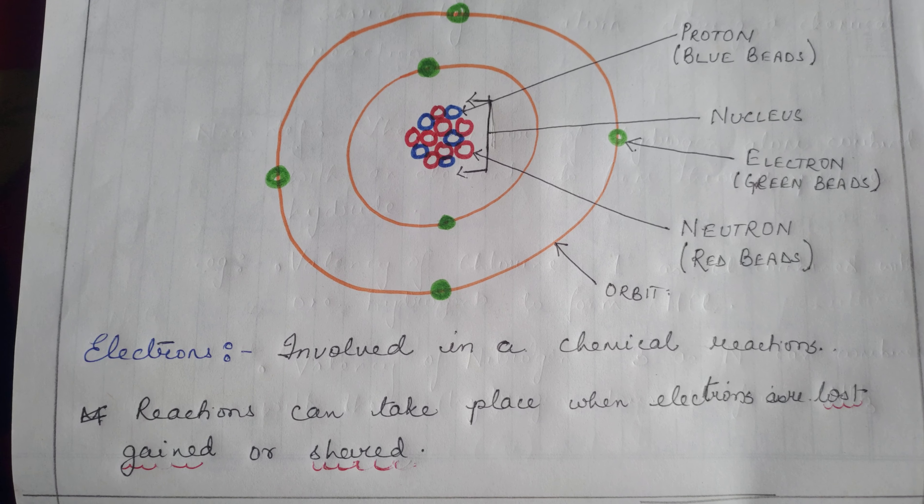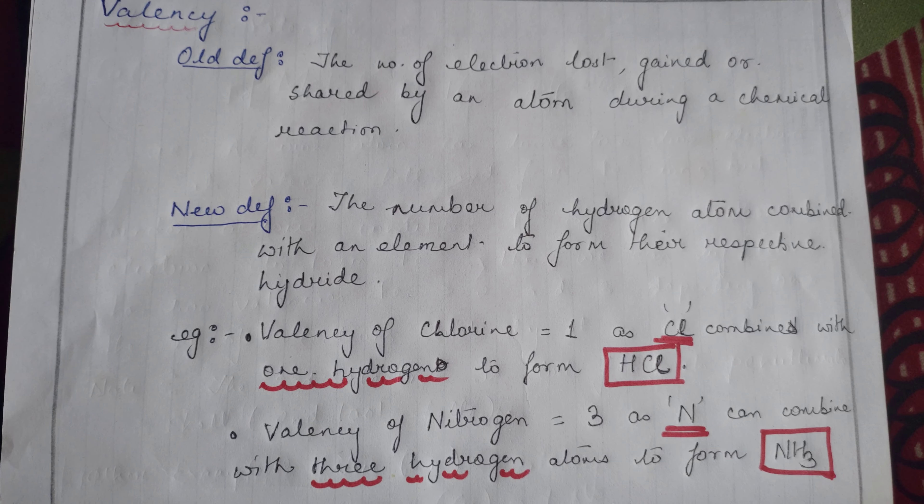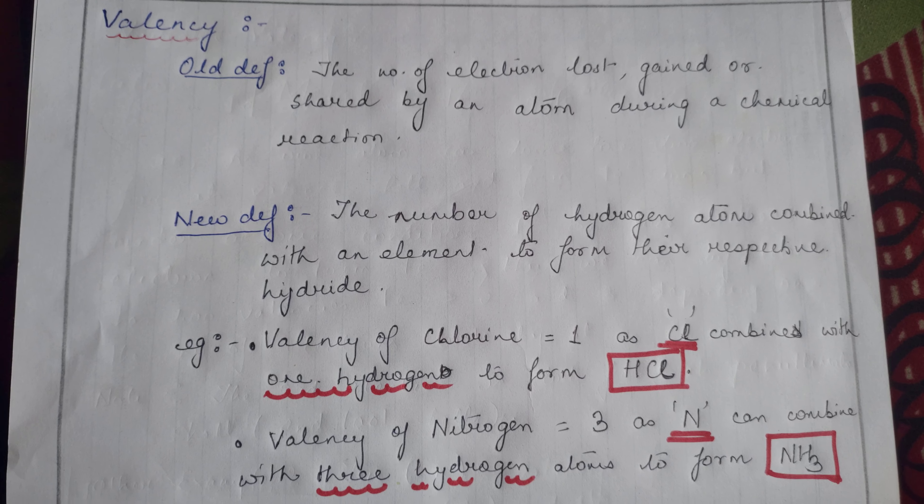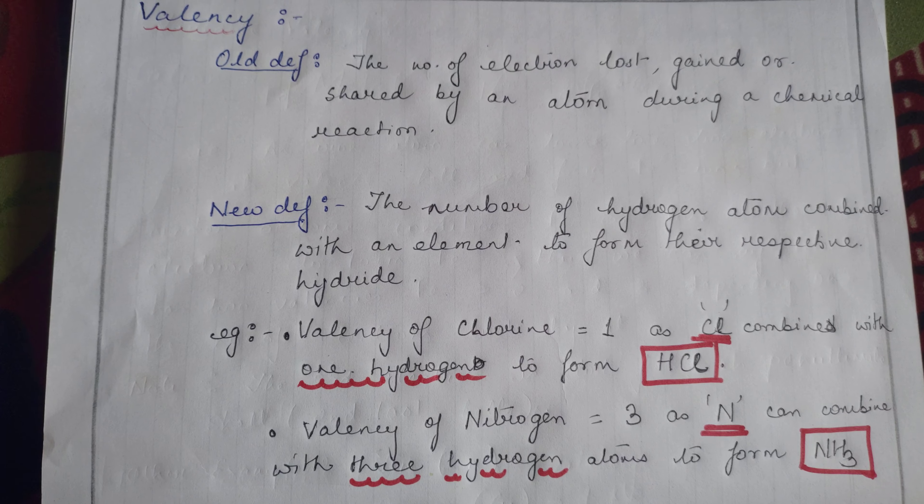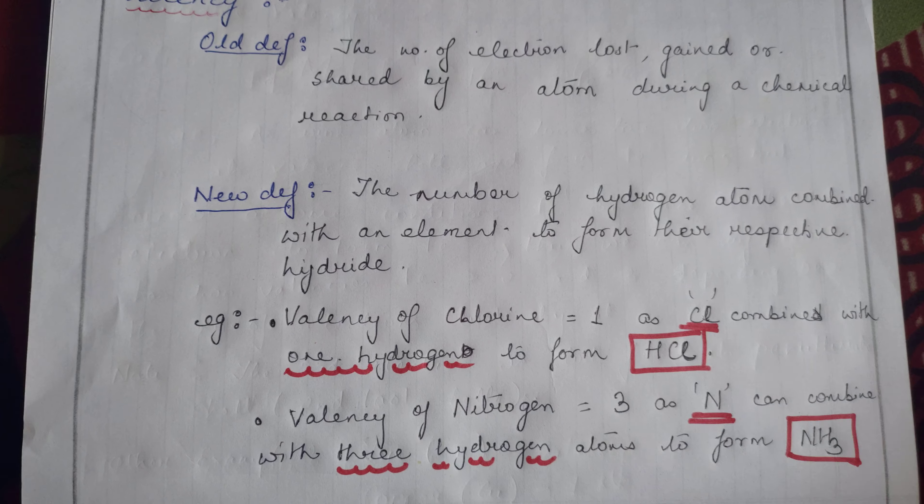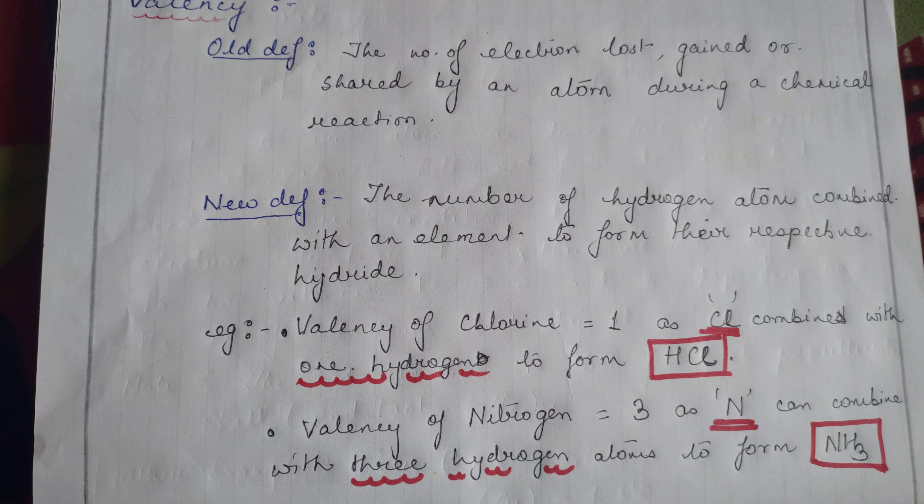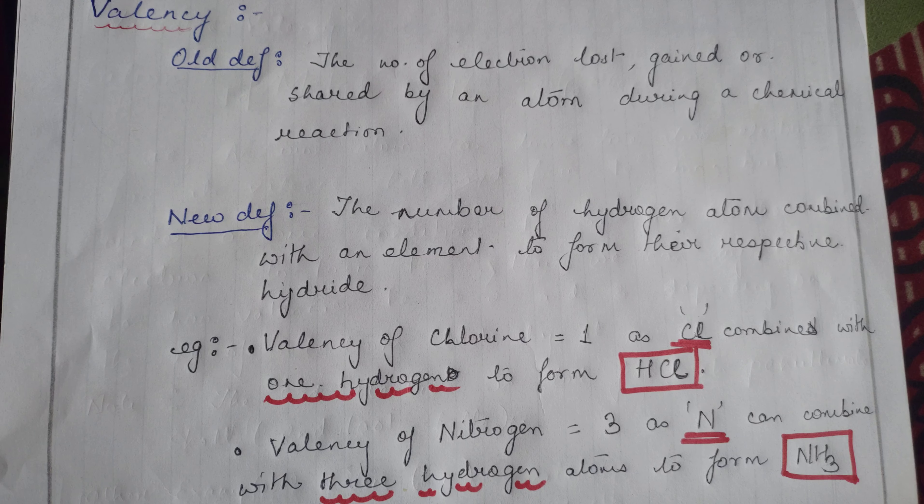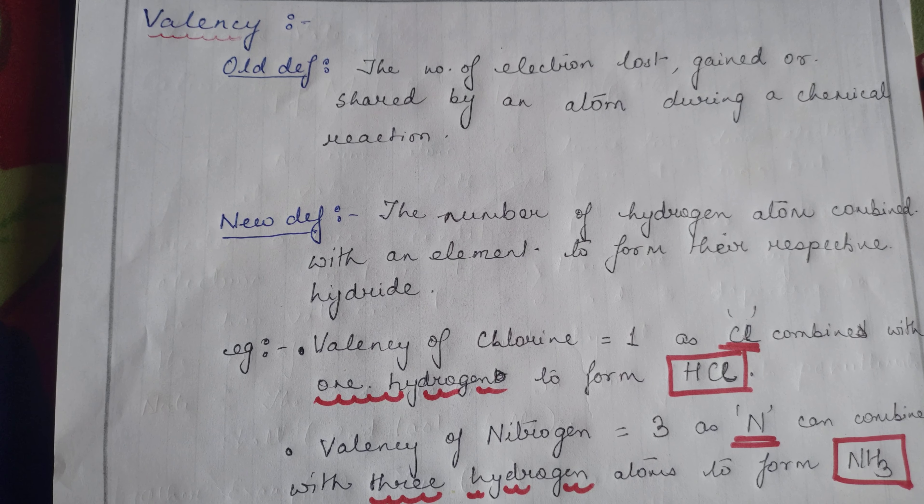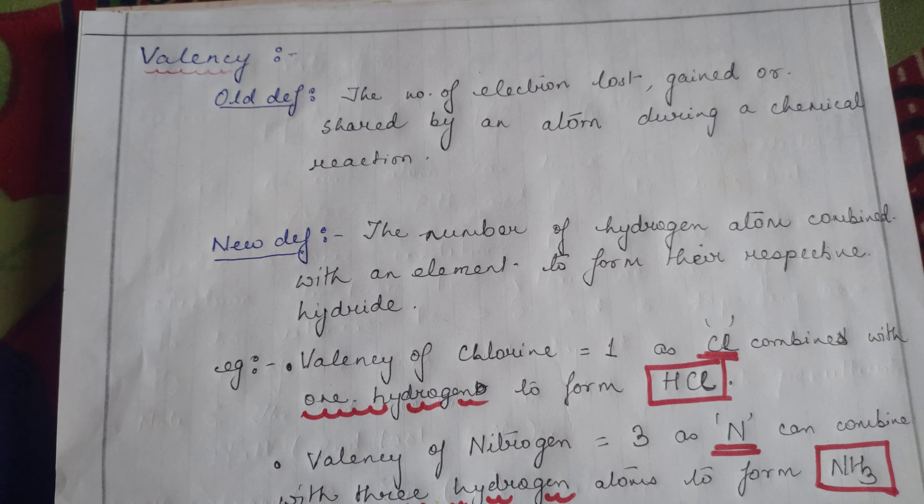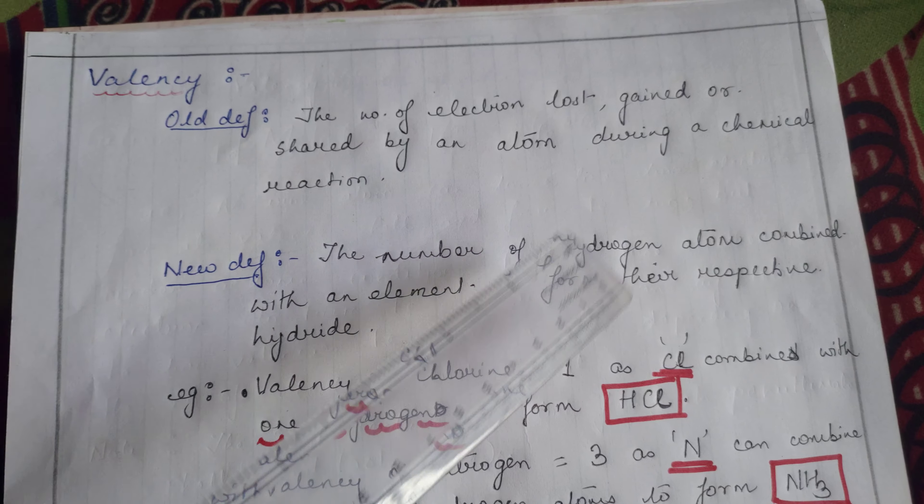How does a chemical reaction take place? A chemical reaction generally takes place when an electron is either lost, gained, or shared. Continuing with the flow, let's talk about valency. What is valency? Valency is defined as the combining capacity of an element. Whenever a chemical reaction takes place, electrons are lost, gained, or shared. The number of electrons lost, gained, or shared during a chemical reaction is called valency.